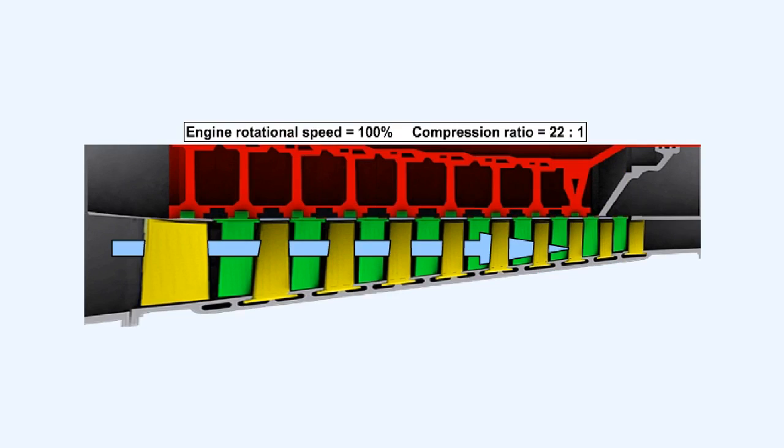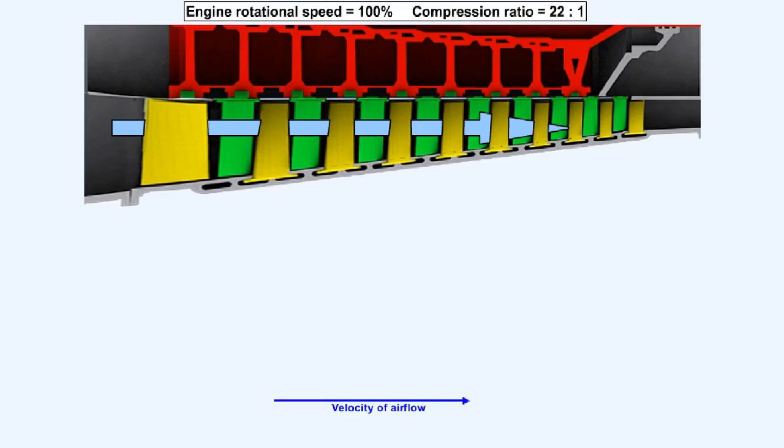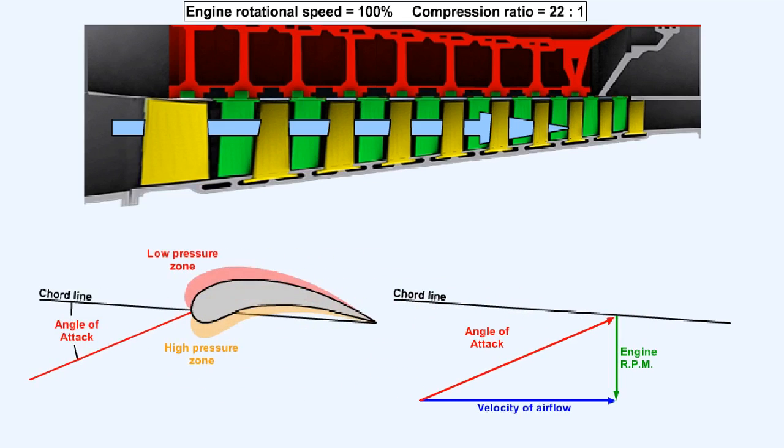Increasing the compression ratio of a compressor makes it progressively more and more difficult to ensure that it operates efficiently over the whole of its speed range. This diagram shows the vectorial relationship between the axial velocity of the air flowing through a compressor and the RPM of that compressor. That relationship gives us the angle of attack over the rotor blade and determines the pressure zones either side of the blade.